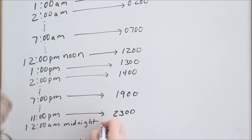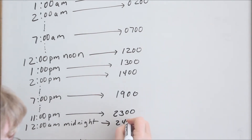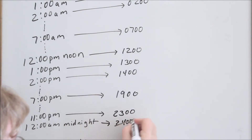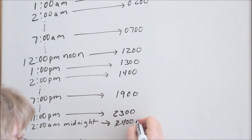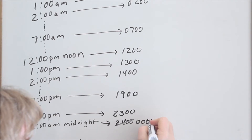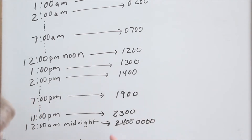When you're back at midnight, we don't say 2400. You're back at 0000. So once you get to 24 hours, you're back at 0000 and you start over.